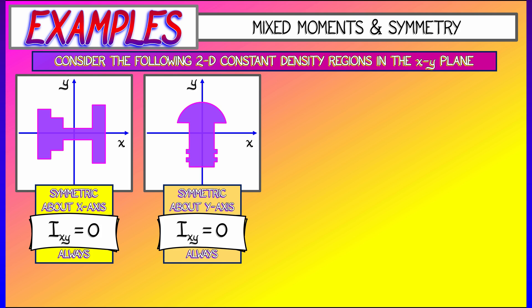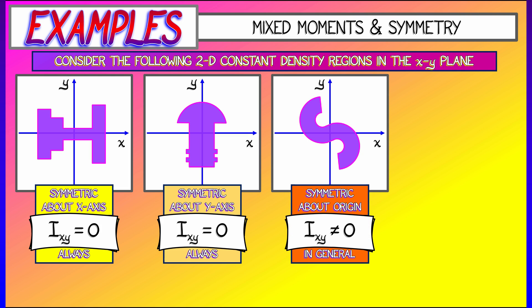The terms in the integral, they're going to cancel because of symmetry. But if I have a shape that is symmetric about the origin, if it's symmetric with respect to a rotation, that does not necessarily lead to a vanishing mixed moment. It might be, but in general, it's not going to be.